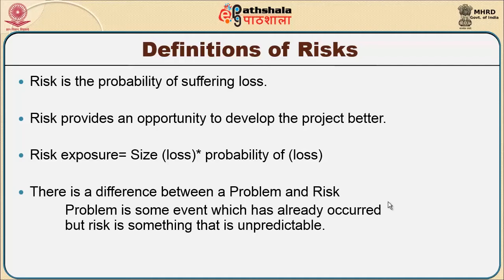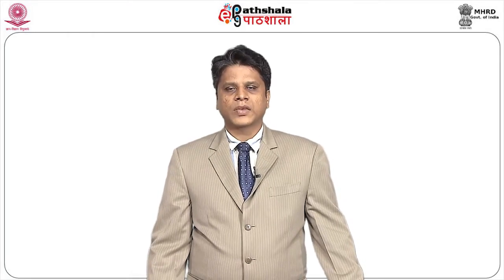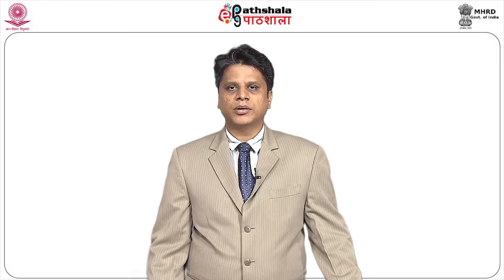With this in mind, we define the various risks associated. Risk is supposed to be the probability of suffering loss. Anything starting from the life cycle of software development — if it comes across a loss which gives an impact on the software — the probability of this suffering loss is called a risk. If this risk is predicted in advance, there is an opportunity to develop the project in a better manner.